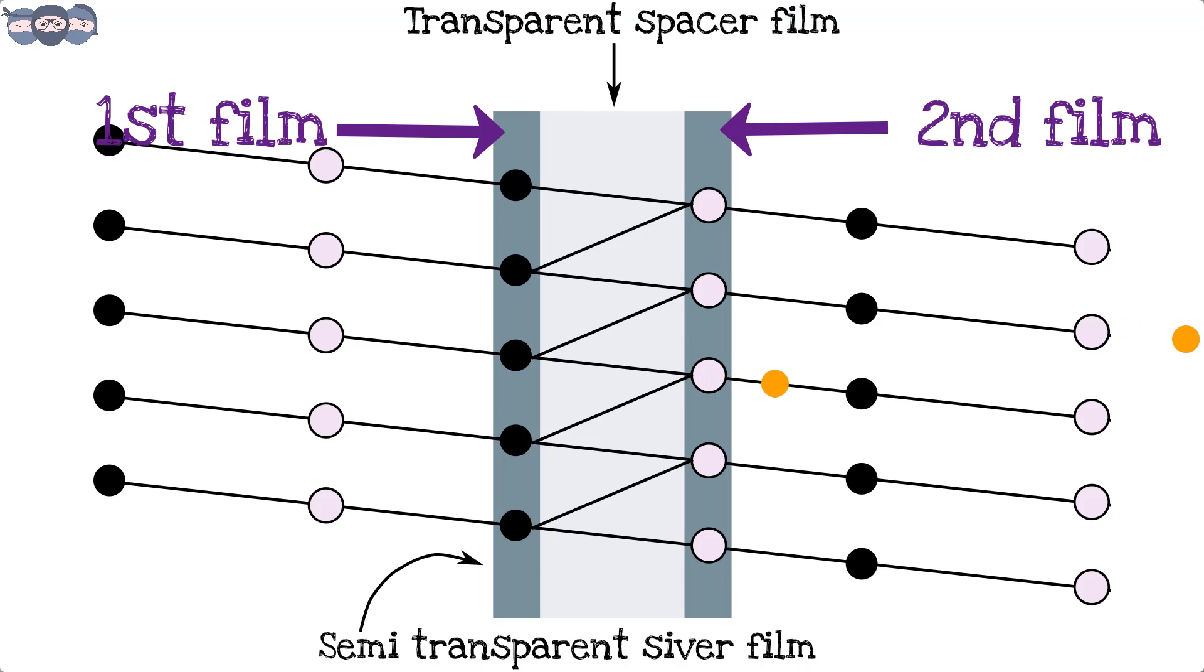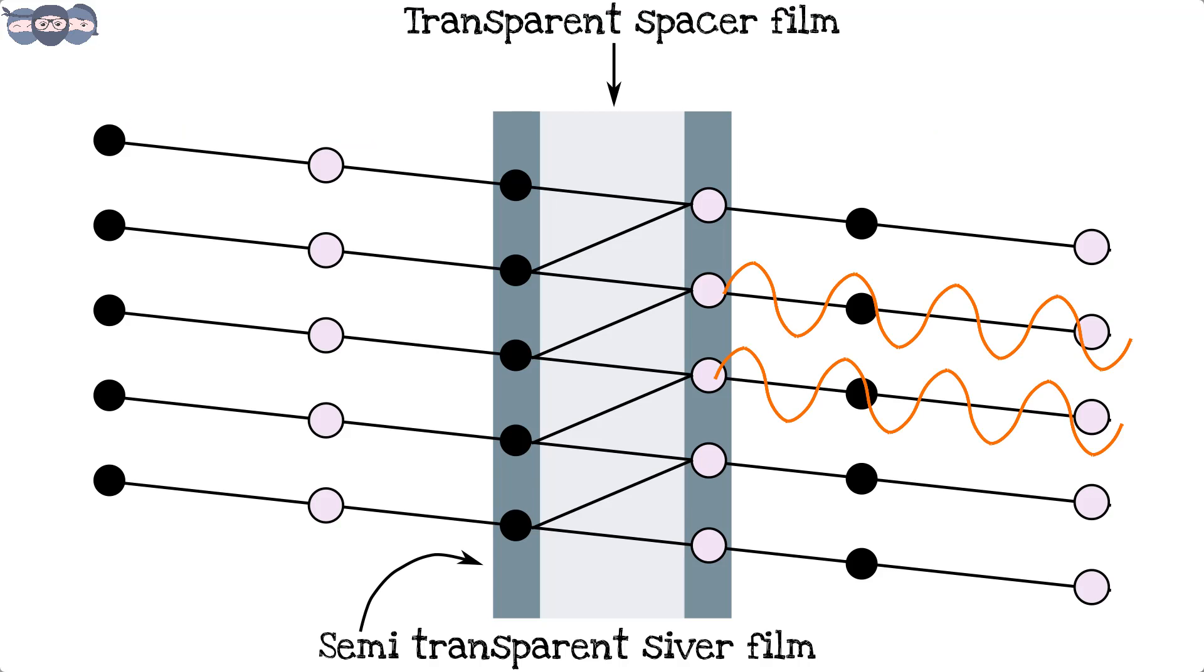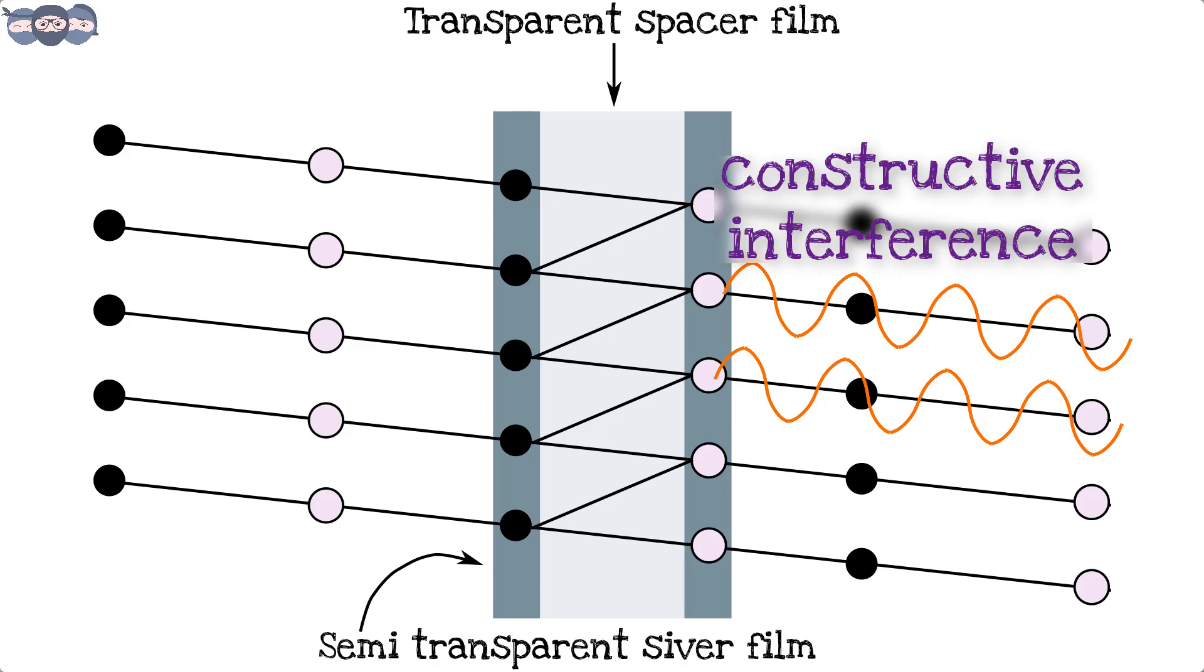On hitting the second silver layer, some part gets transmitted. If this transmitted wave and the earlier transmitted wave are in phase and their troughs match, a constructive interference takes place. Radiations of all the other wavelengths undergo destructive interference and those waves get diminished.